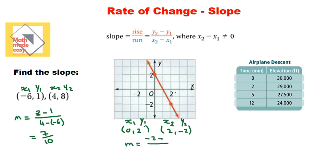So we have negative 2 minus 2 over 2 minus 0. So it's negative 4 over 2. The slope is negative 2.